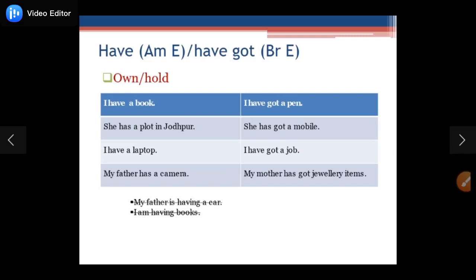Just one antar: 'have' is used by Americans and 'have got' is preferred by Britishers. That is the only difference. Otherwise, meaning-wise, there is no difference between 'have' and 'have got.' Jahaan jahaan aap 'have' use karte hai, vahaan 'have got' use kar sakte hai.